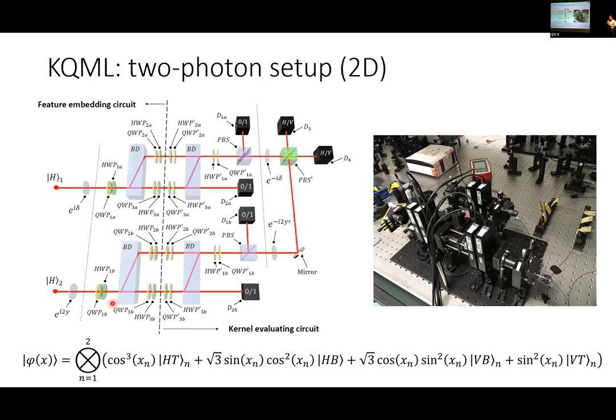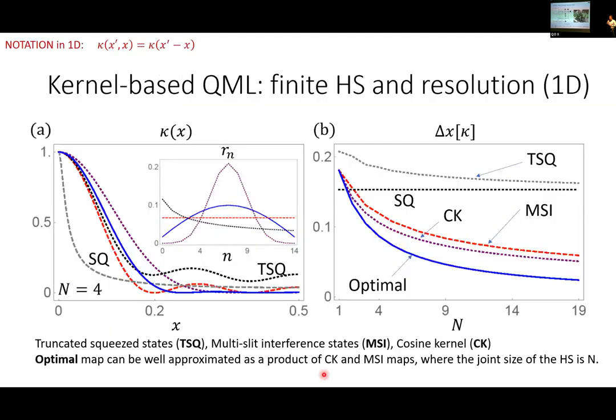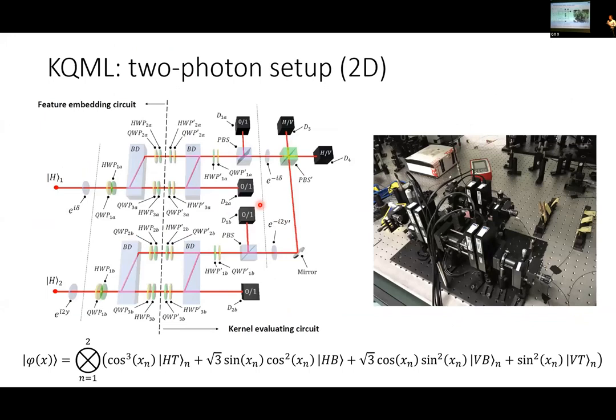We can get this exponential enhancement in the number of qubits needed to express quite narrow kernels, and we can do an optical experiment. We built a setup - here is a very nice scheme of it and here is the picture.